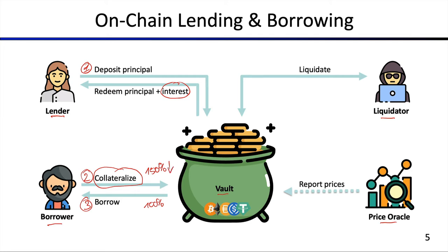If the collateral prices drop below a certain threshold — which we'll discuss later — liquidators are incentivized to issue a liquidation request to the vault. Liquidators are incentivized because they receive a discount on the collateral they can purchase. This basically incentivizes them to participate in this particular protocol. This is a high-level overview; we will go into more detail in the following slides, but this gives a hint of how these different actors work together.